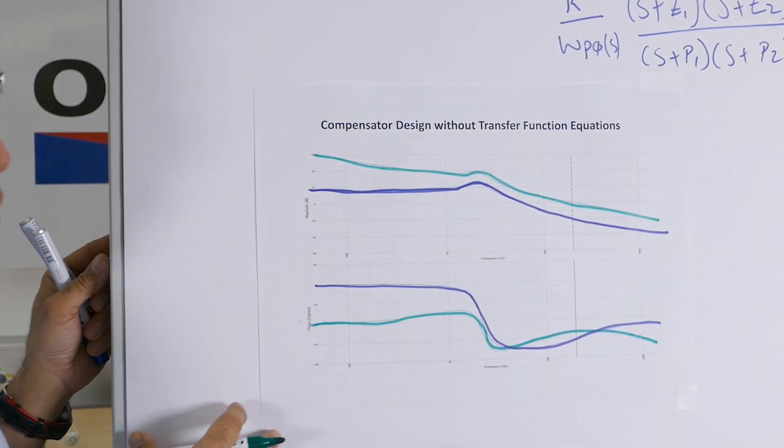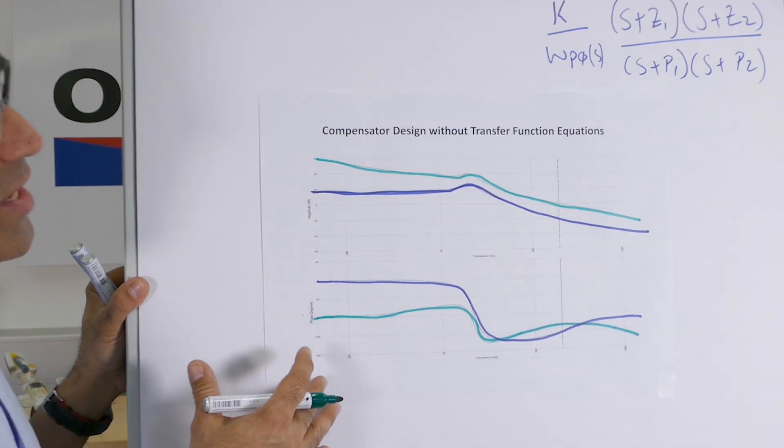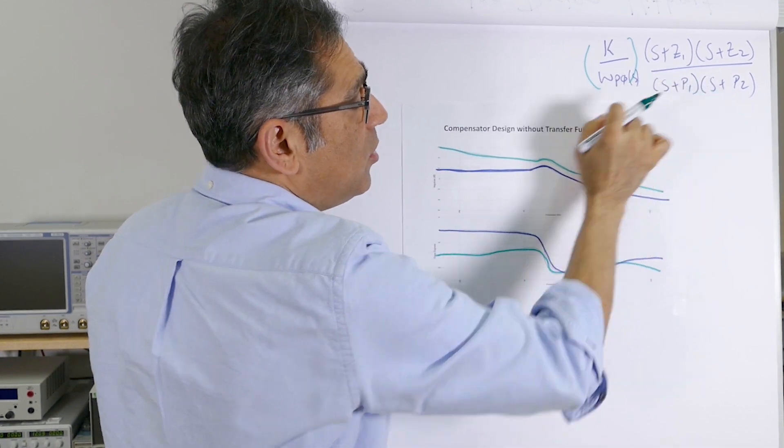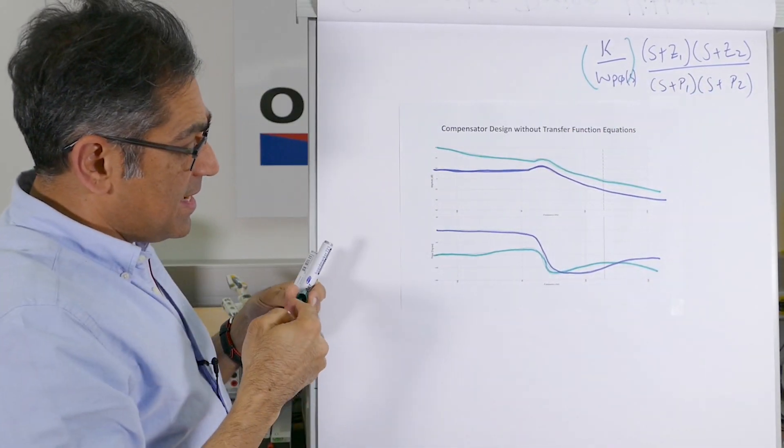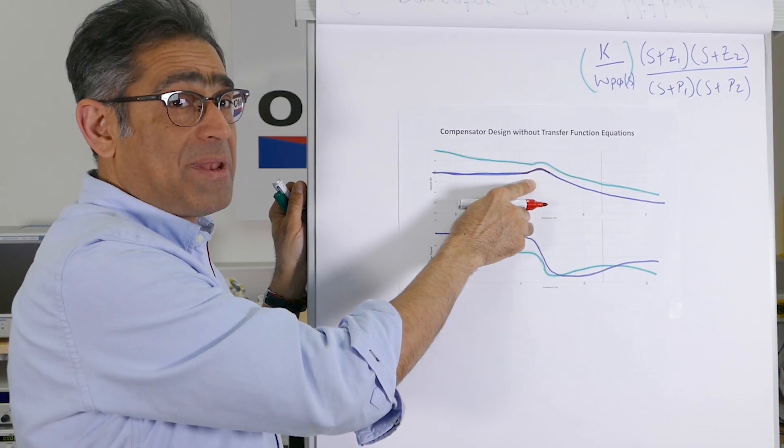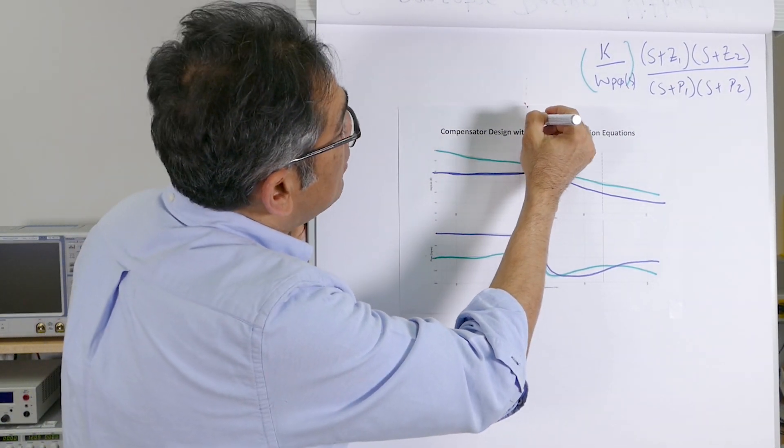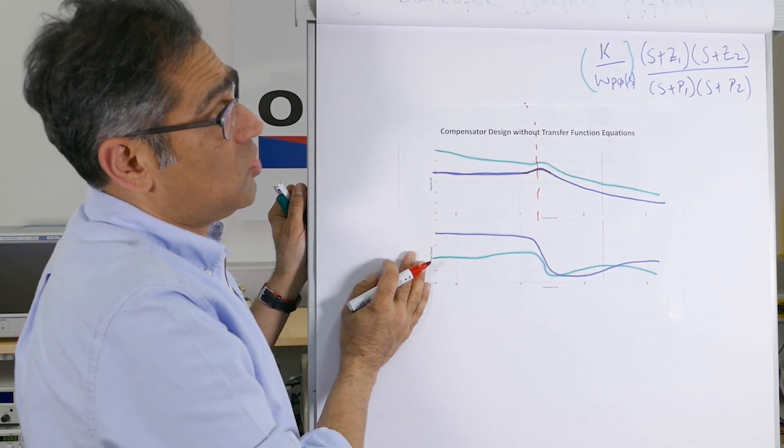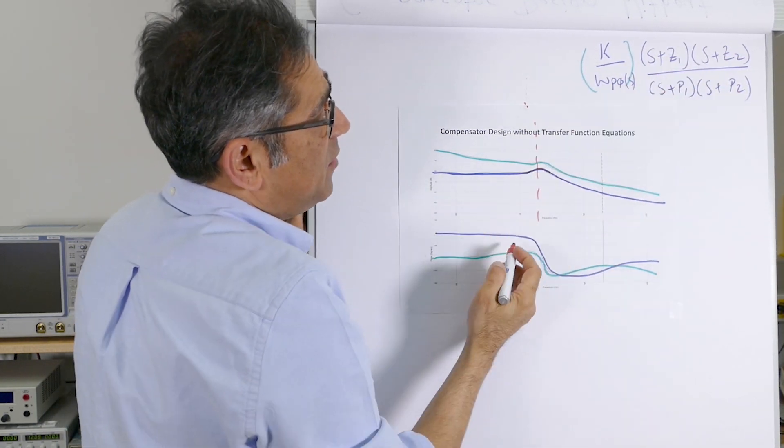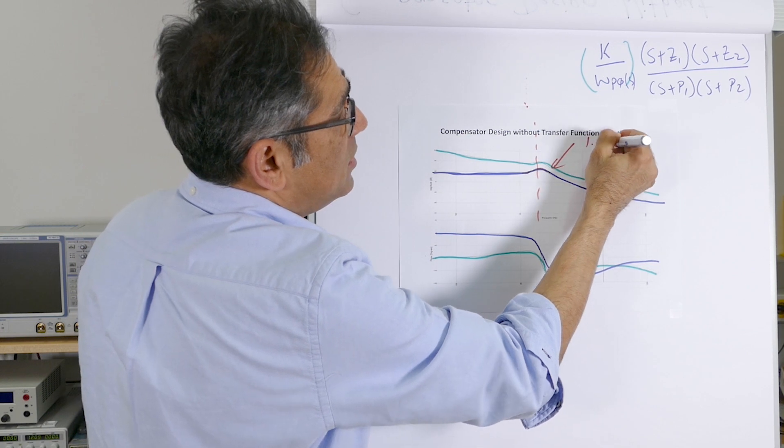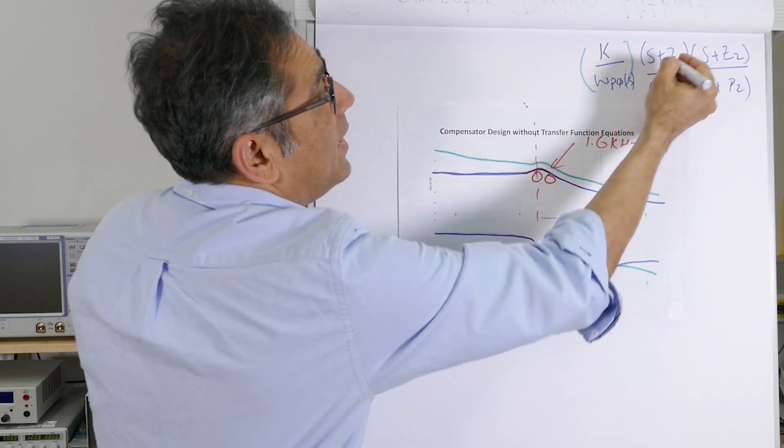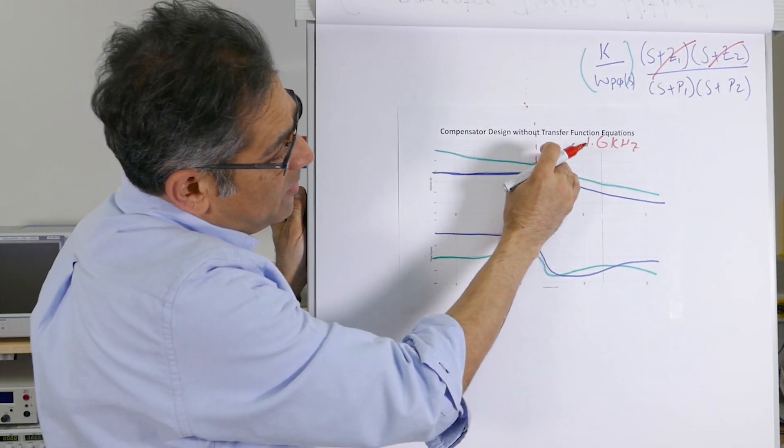It's a voltage mode buck converter. I'm going to use a type 3 compensator, and for that I have one pole at origin, two zeros, and two poles. Looking at the blue line, I see I've got a resonance bump here around 1.6 kilohertz. The resonant bump is the result of two poles of the plant. So to cancel these two, I place the two zeros of my transfer function at 1.6 kilohertz. That makes this go flat.